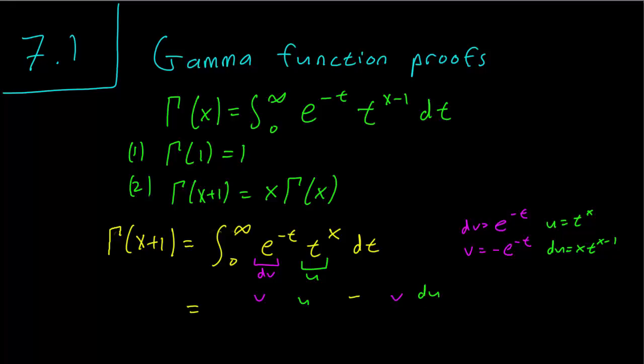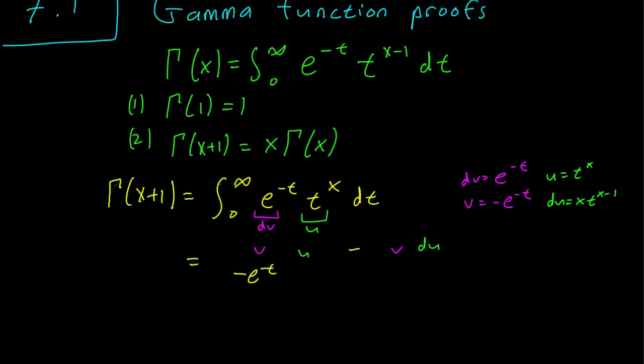And writing that down, v is just going to be minus e to the minus t, u is going to be t raised to the x power. And this first term is going to be taken from infinity to 0, minus v.